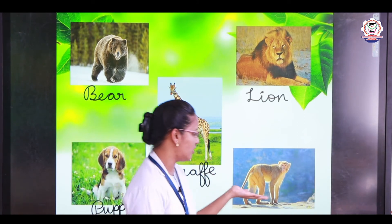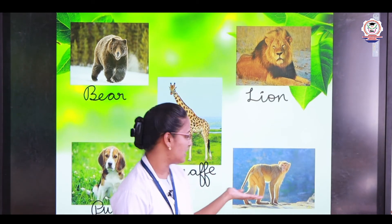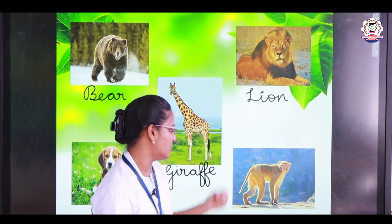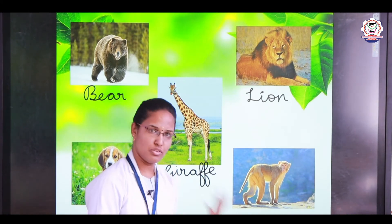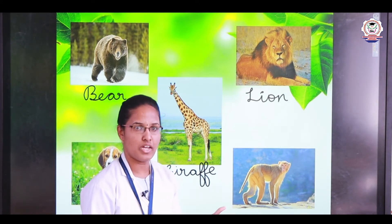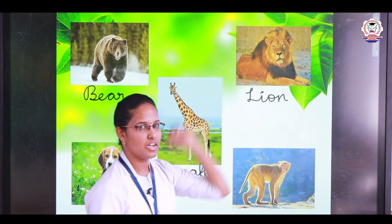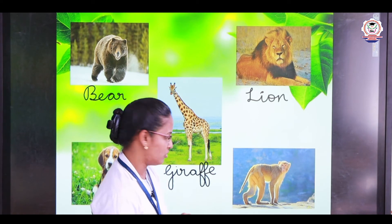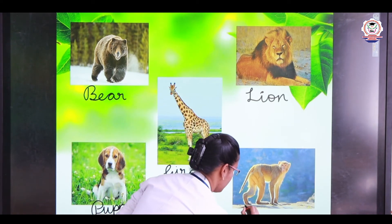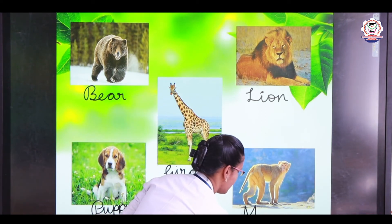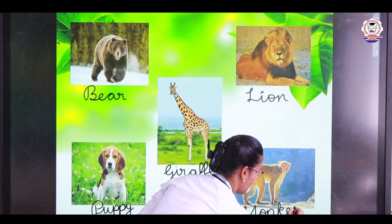And the last land animal example — what is this? It is a monkey! M-O-N-K-E-Y. We can see monkeys in zoos, forests, and sometimes in our surroundings also.